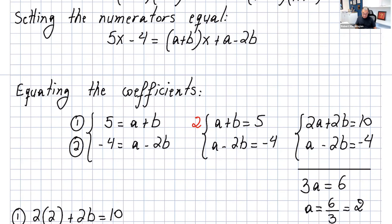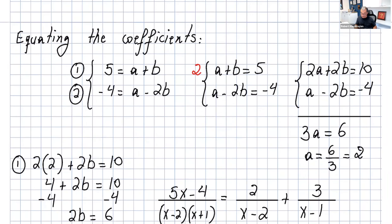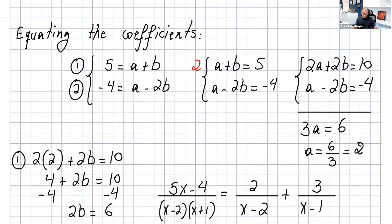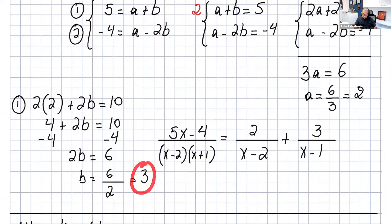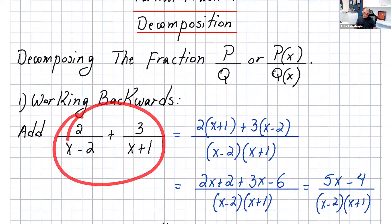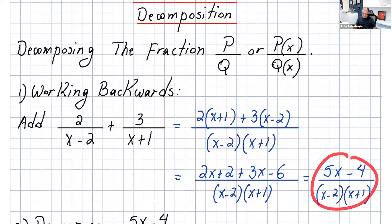You get this system and can solve for a and b. Multiply the first equation by 2 to get 2a plus 2b equals 10. Adding that to the second equation eliminates b and you get 3a equals 6, so a equals 2. Going back to the first equation, a plus b equals 5, substituting a equals 2 gives 2 plus 2b equals 10, so b equals 3. And as you notice we started with 5x minus 4 over x minus 2 times x plus 1, and decomposed it into 2 over x minus 2 plus 3 over x plus 1.